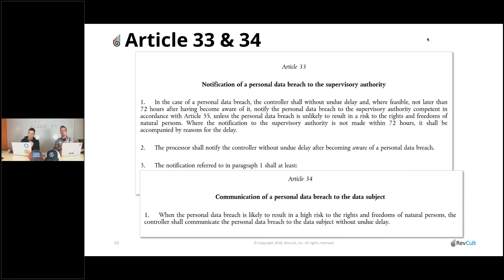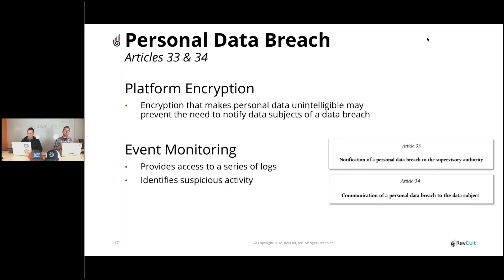Articles 33 and 34 really talk about breaches. If you lose information, you've got to tell the individual and tell the authorities. Article 33 is to tell the authorities, Article 34 is to tell the individual. From a Shield perspective, we can minimize the risk of a breach by using platform encryption to make data unintelligible at the database tier. If that data was breached or extracted, your breach may be significantly less impactful if personally identifiable information was encrypted at rest. Event monitoring will also help you do forensics to know the severity — is it elevated to the level that you need to notify the data subject, or the individual?